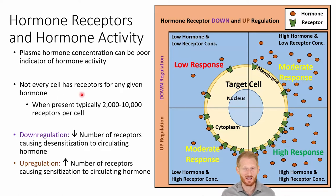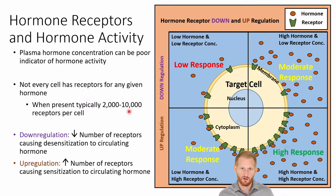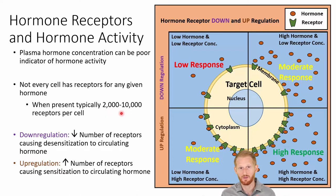Remember, not every cell has every receptor for every type of hormone. When there is a receptor on a cell, there are typically between 2,000 and 10,000 receptors for that hormone on that cell. We can up- and down-regulate this number.